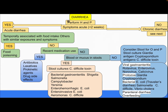How to approach a child with diarrhea: after performing history and physical examination, determine if signs or symptoms are acute (less than two weeks). If yes, this is acute diarrhea. Is it temporarily associated with food intake or others with similar exposure and symptoms? If yes, this is food poisoning. If no, is there recent medication use? If yes, this may be an antibiotic, laxative, prokinetic agent, or drug side effect.